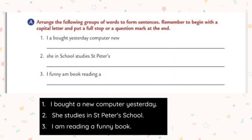Now we are going to see the subject in a command or request sentence. In command or request sentences, the subject 'you' is often understood but not stated. For example: 'Shut the door.' This is a command. We can confuse ourselves thinking there is no subject, but we should understand that the subject is 'you.' So we read it as: 'You shut the door.'